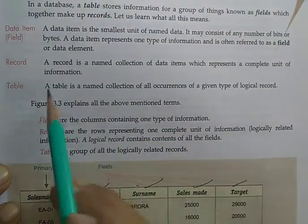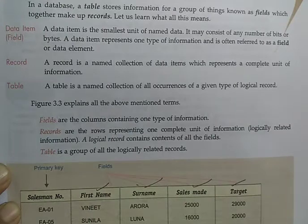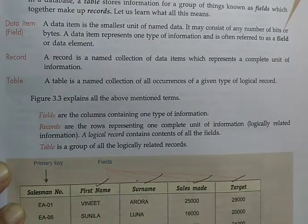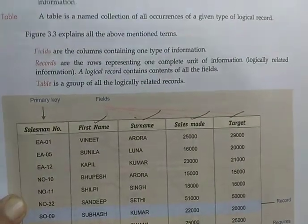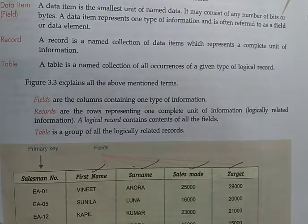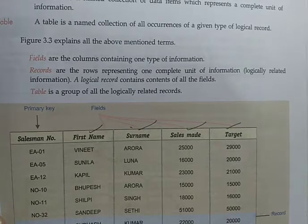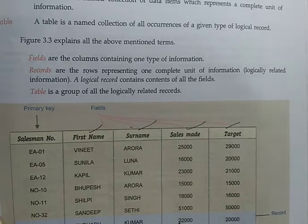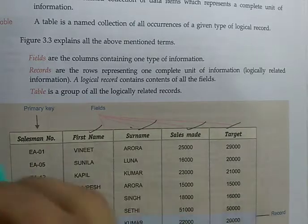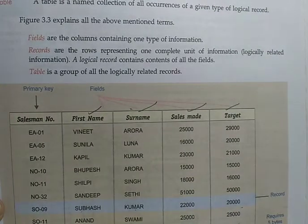A record is a collection of data items which represent a complete unit of information — for example, a particular student's complete information such as name, father's name, mother's name, and class. That complete information is called a record. In this table, Salesman Number, First Name, Surname, Sales Made, and Target together form a record. That's all for today — thank you so much.